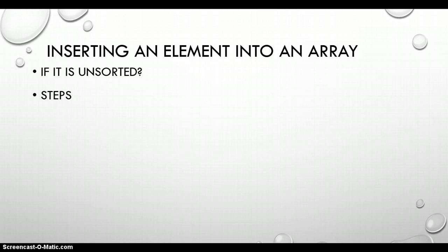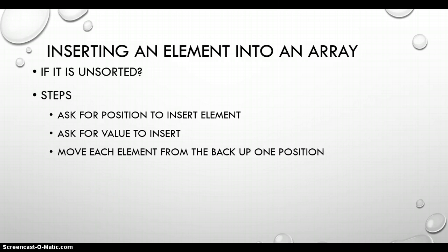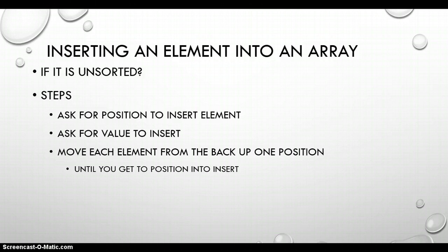The steps for an unsorted array involve the following: first, we need to find out where we want to insert this element into the array, and then we need to find out what value we must insert. With an unsorted array we don't know where they want to put it, so we need to ask the user for that information — the position and the value to insert. After that, we're going to move each element from the back up one position, moving the last one up, then the second last, then the third last, until we get to the position where we want to insert the element.